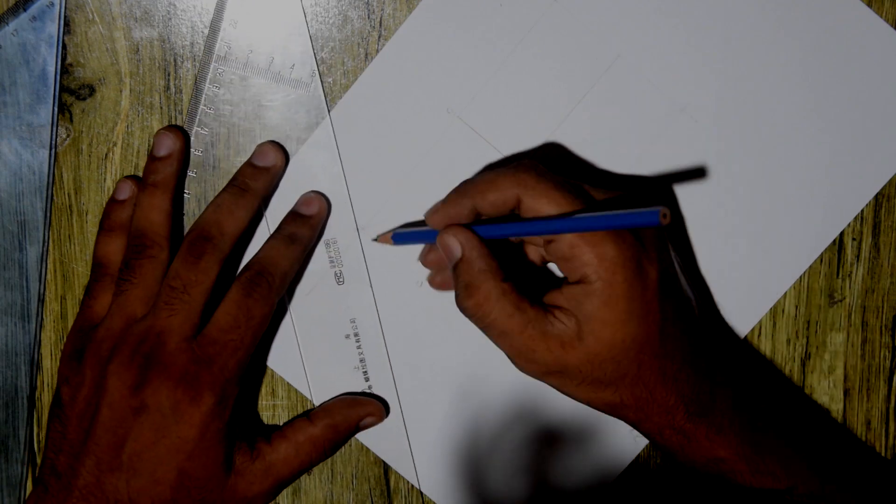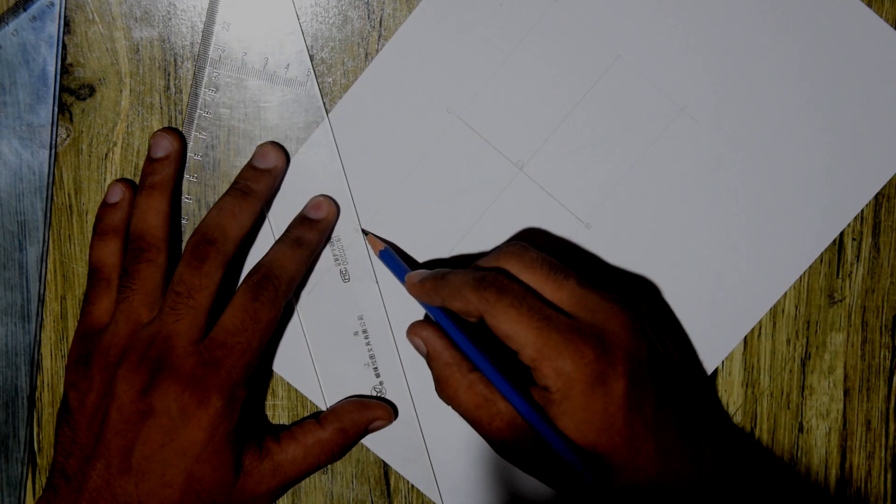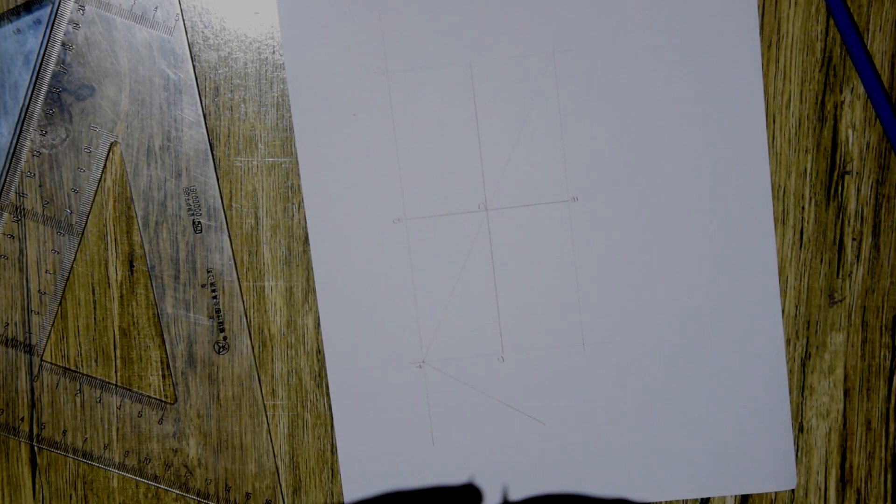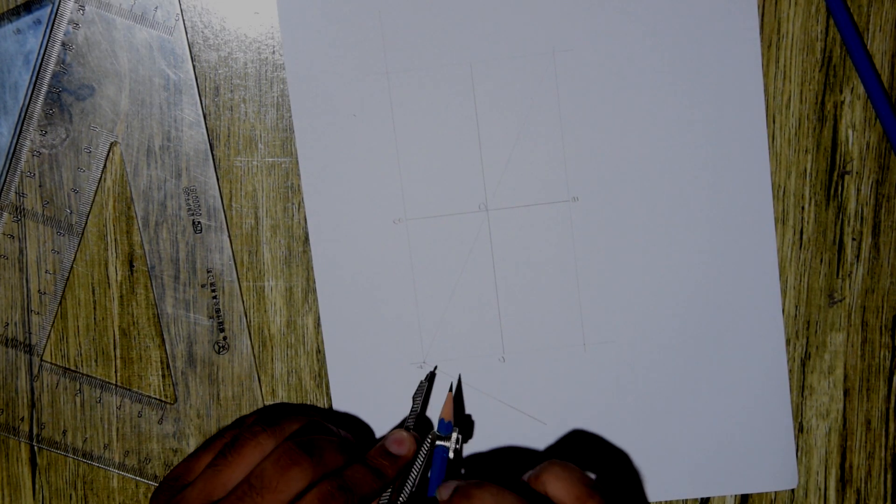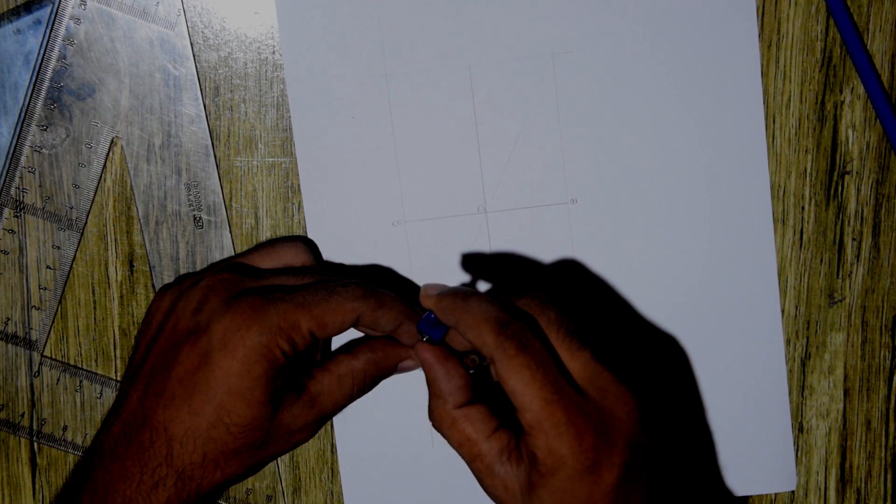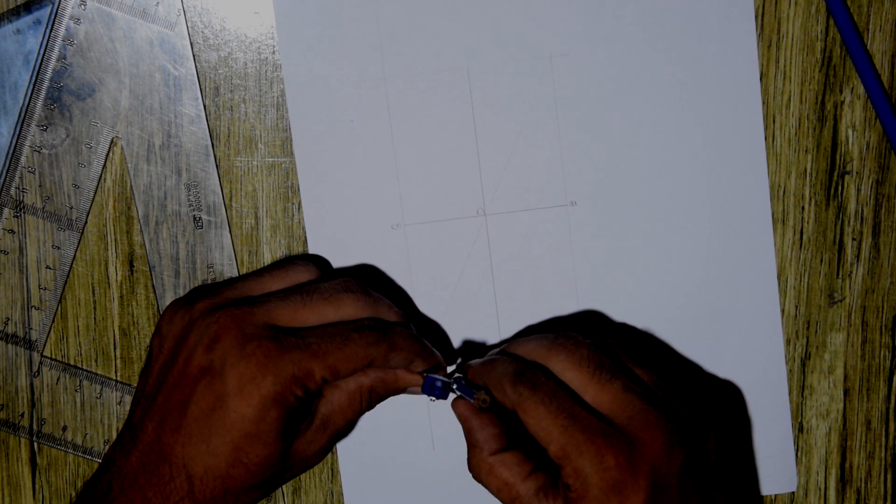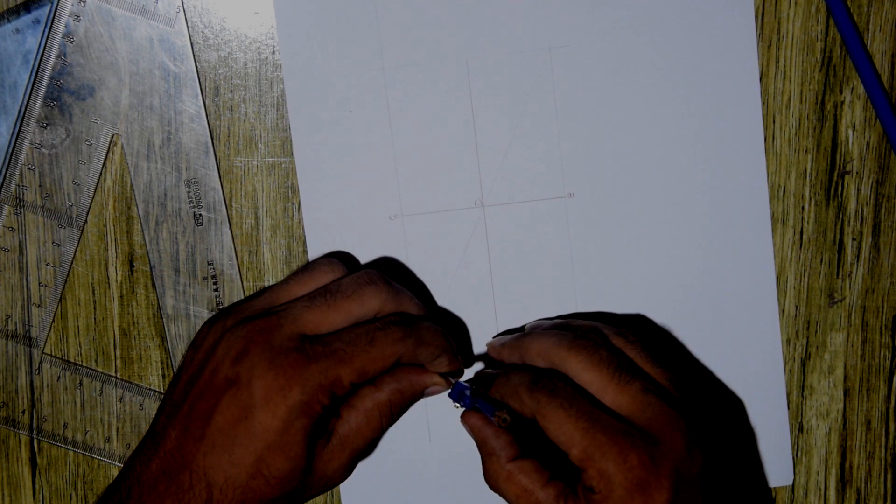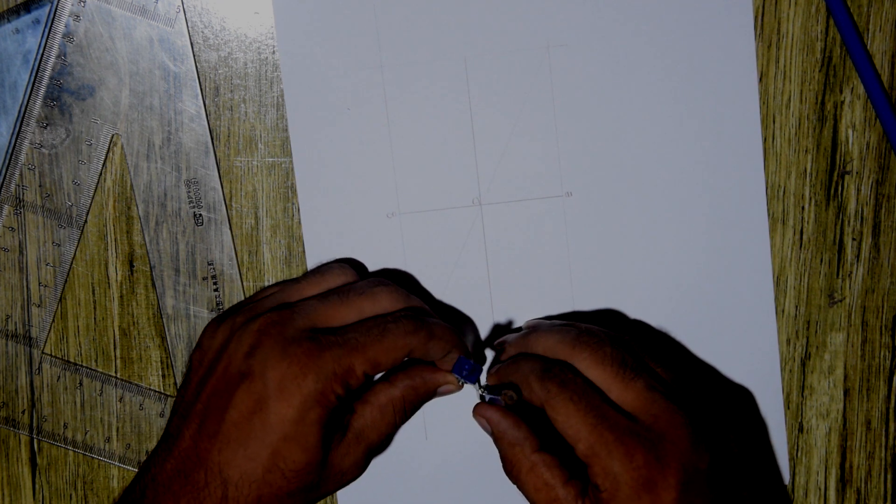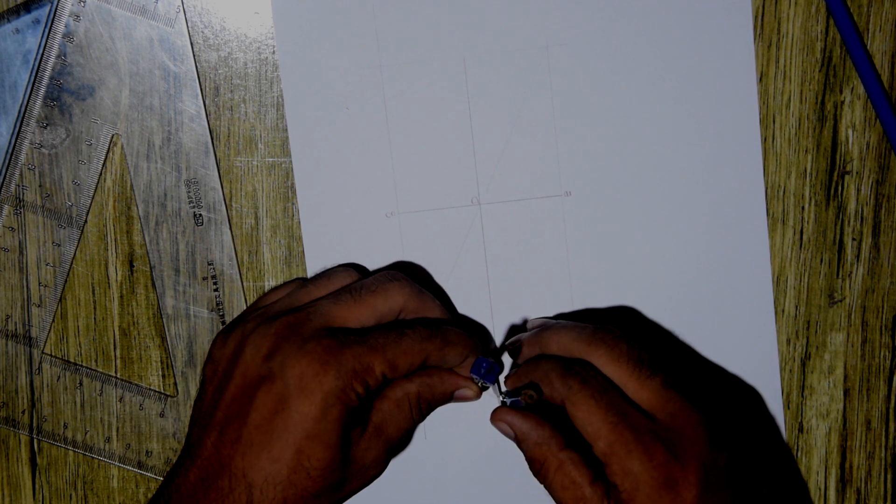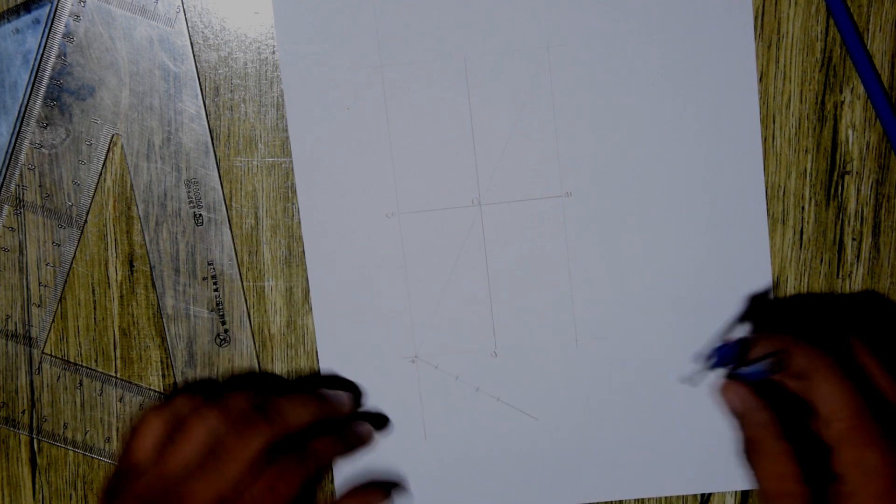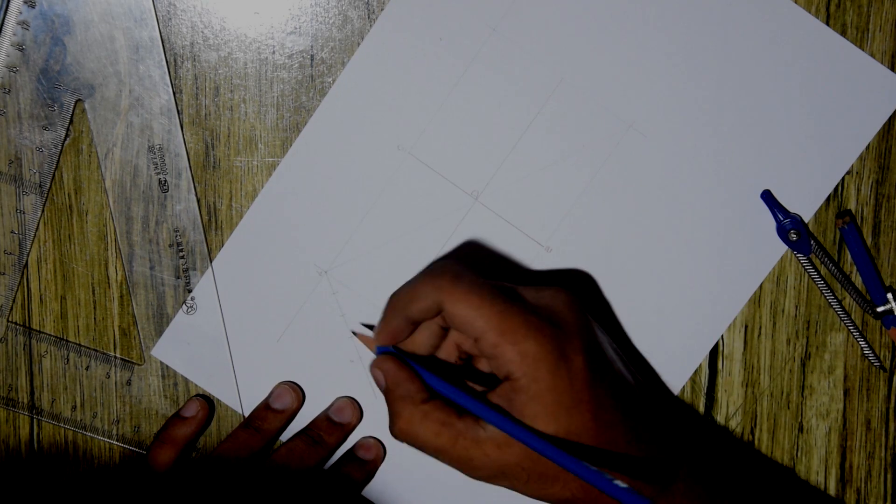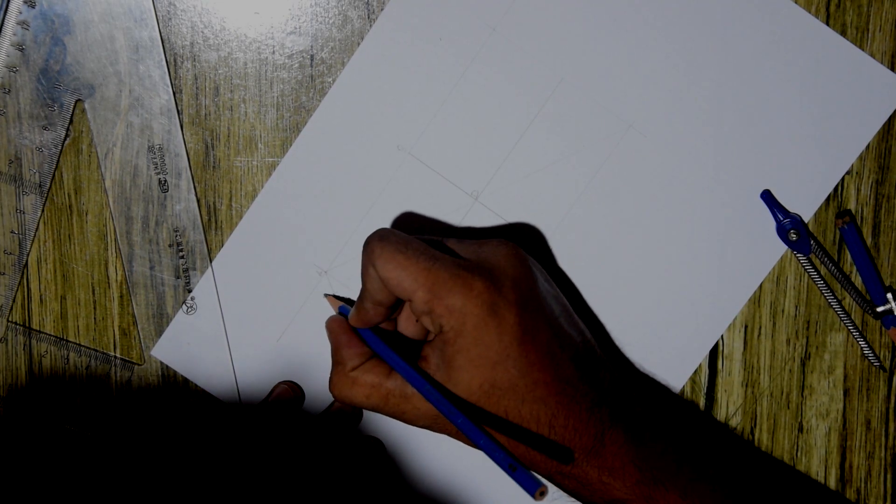Divide the line AC into four equal parts. One, two, three, and four.